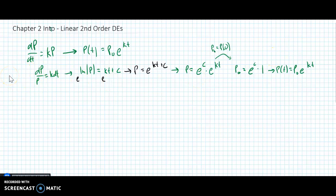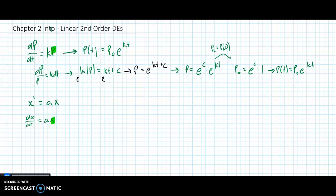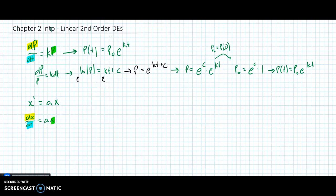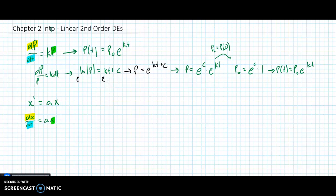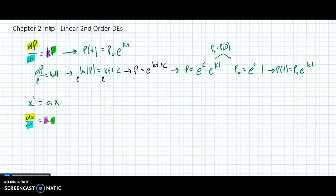And I get p(t) is p naught e to the kt. So next thing I want you to do is recognize that x prime equals a times x is really just the same form because it's dx/dt equals a times x. And if I were to highlight little pieces, this is that, this is that, this is that.